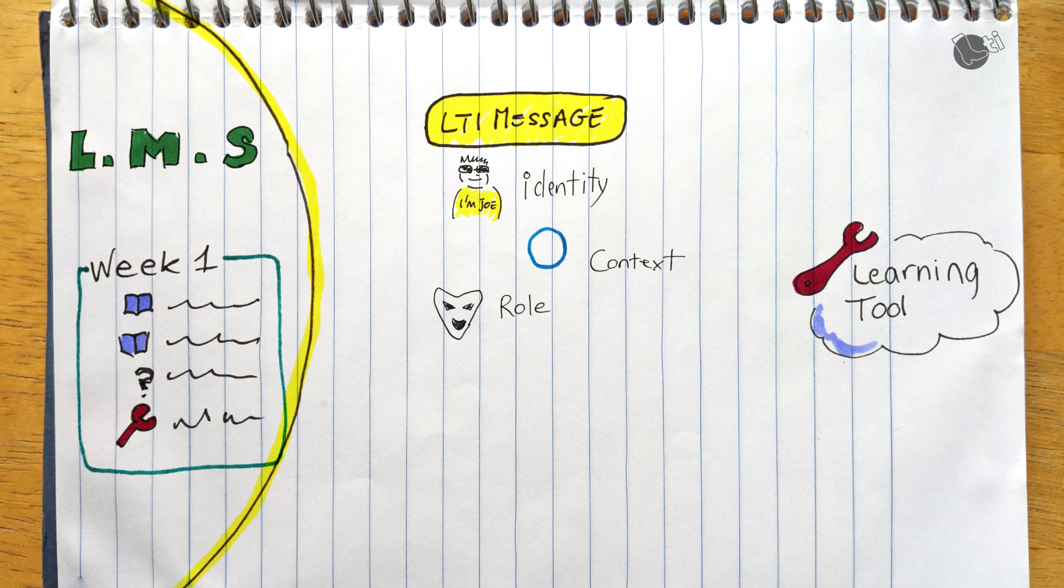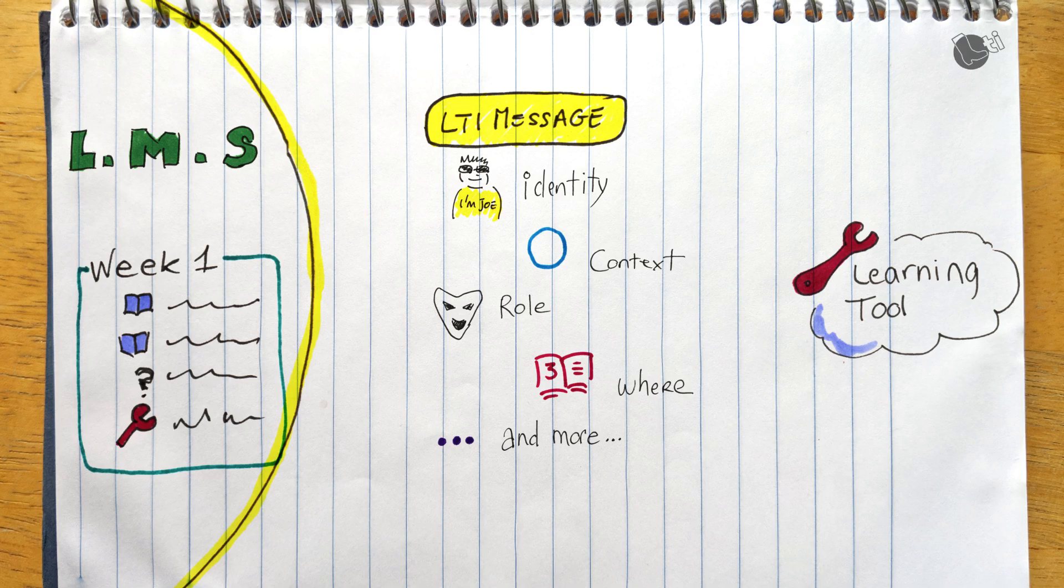So a tool also needs to know what to open. It knows which course, which user, which roles, but what is the thing you want to open? For example, which chapter, which simulation, which game, which quiz. And there are a few other contextual data that are defined as part of the LTI message.